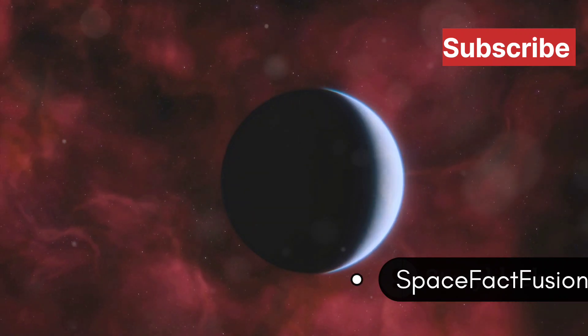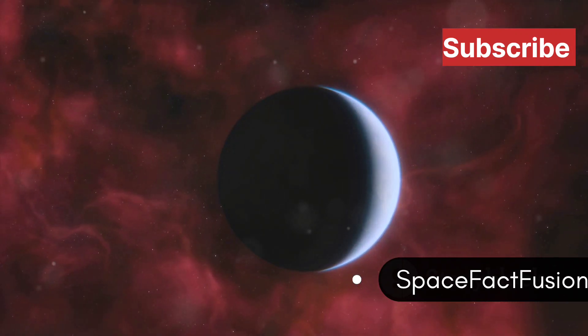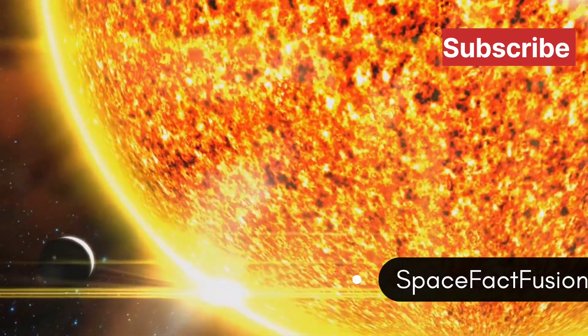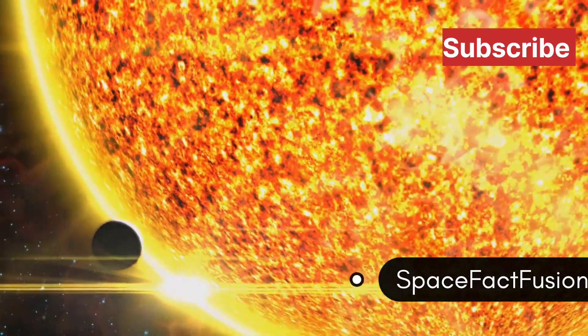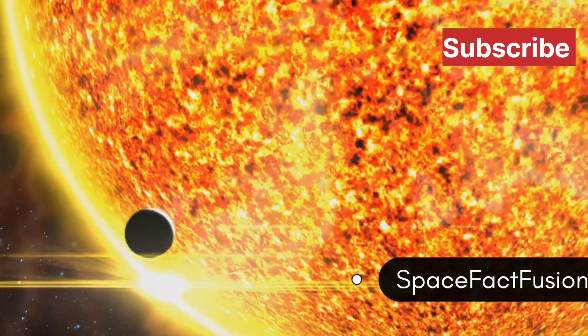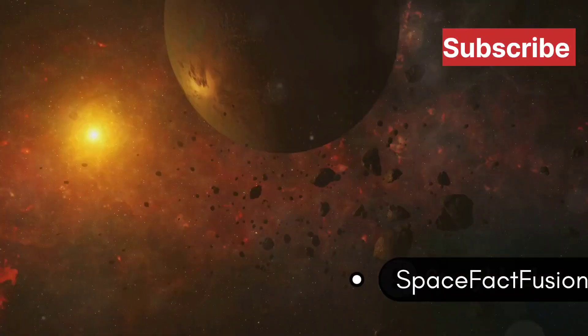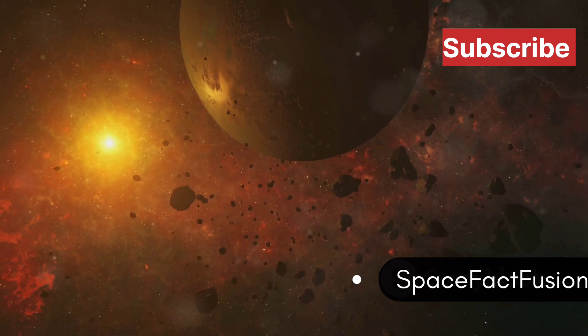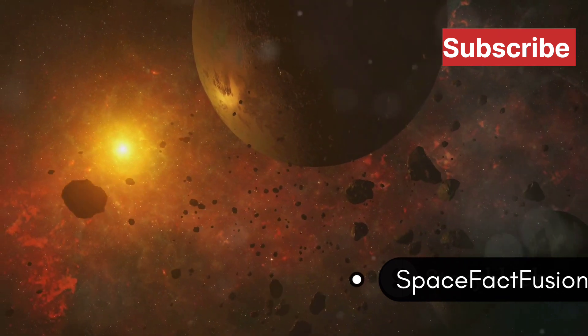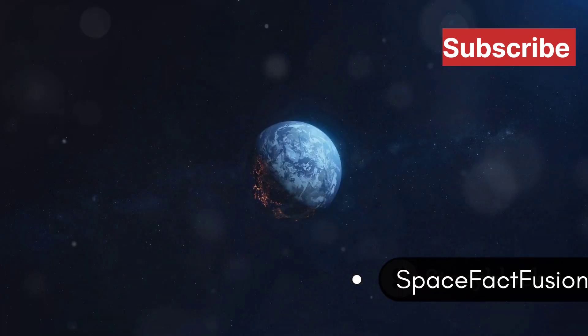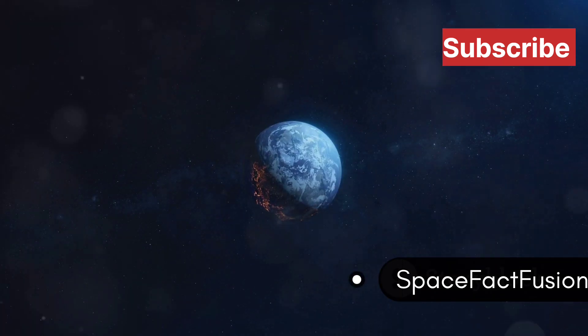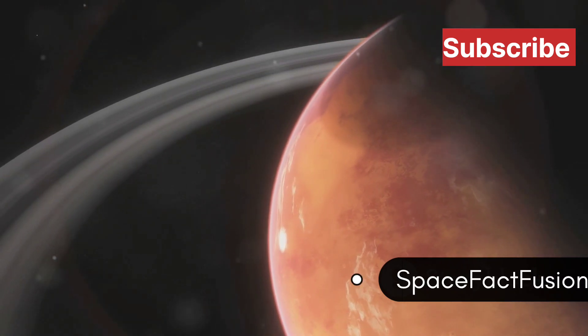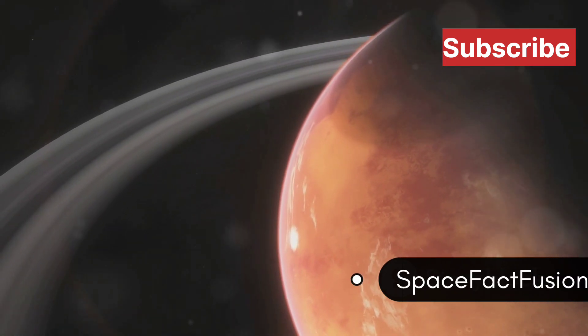Scientists believe HD 189733b's atmosphere contains high amounts of silicates. The extreme heat on the day side vaporizes these silicates, which then condense into tiny glass particles on the cooler side. HD 189733b serves as a reminder that the universe is full of surprises—often beautiful, sometimes terrifying. So the next time you complain about the weather on Earth, just be thankful it's not raining glass. This planet's extreme conditions make it one of the most fascinating worlds we've discovered.